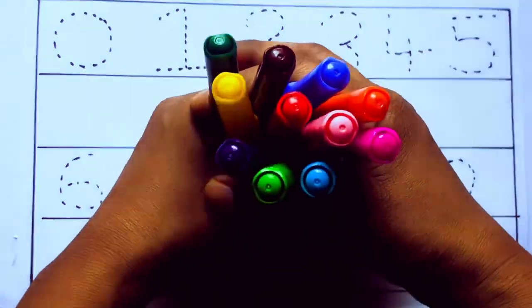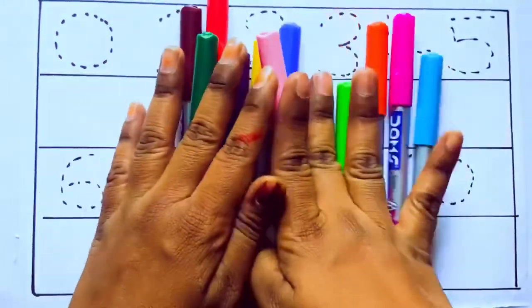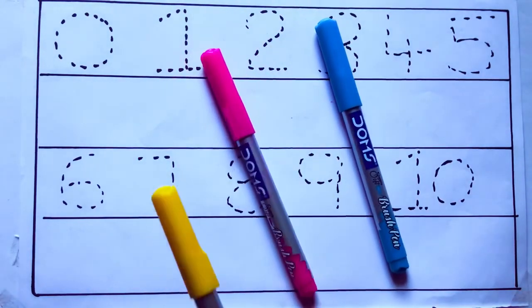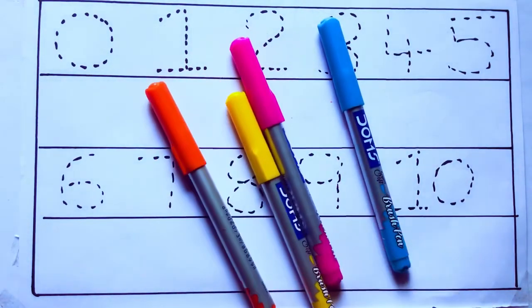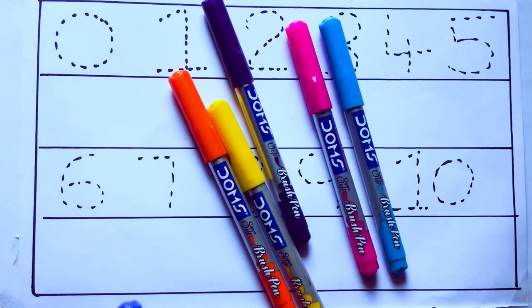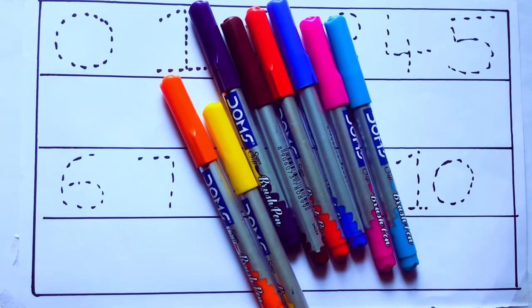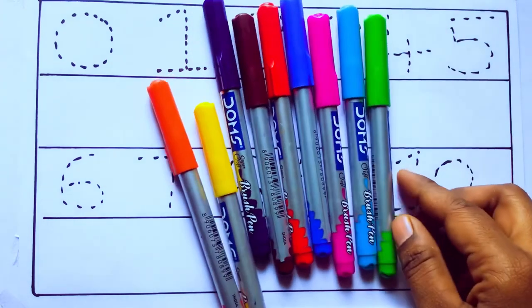Let's learn some colors. These are all the color pencils. Let's learn the names. Sky blue color, pink color, yellow color, orange color, violet color, blue color, brown color, red color, green color.